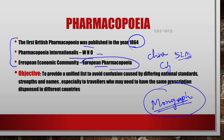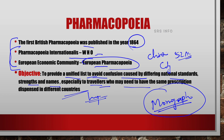What was the necessity or objective behind these initiatives? The main objective was to provide a unified list to avoid the confusion caused by differing national standards, strengths and names — especially for travelers who may need to have the same prescription dispensed in different countries. When a person travels internationally, there may be confusion when national standards differ, so it is necessary to have a unified list. This is also mainly focused on international travelers.